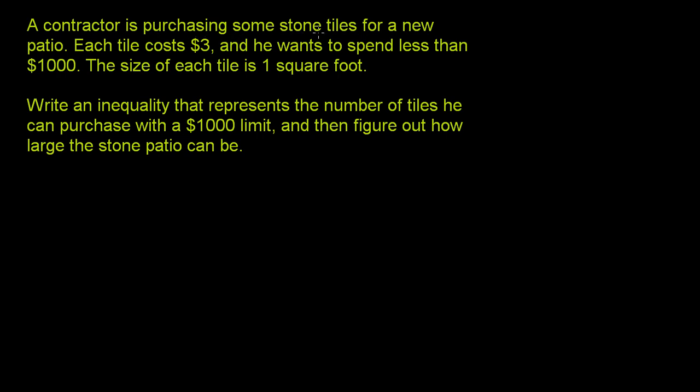A contractor is purchasing some stone tiles for a new patio. Each tile costs $3, and he wants to spend less than $1,000 - not less than or equal to $1,000. The size of each tile is one square foot.